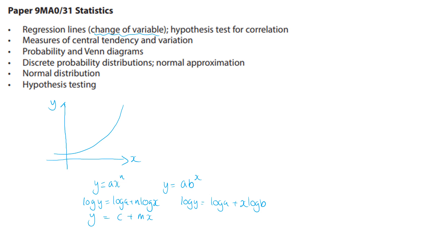So here the n which was the power and this which was the constant is going to be the gradient, and you would have to log both of the variables in order to get something that looks like a straight line, and log a is the y-axis intercept.